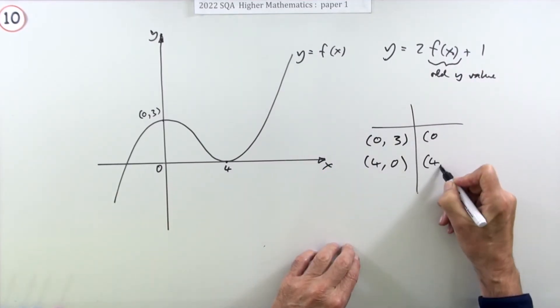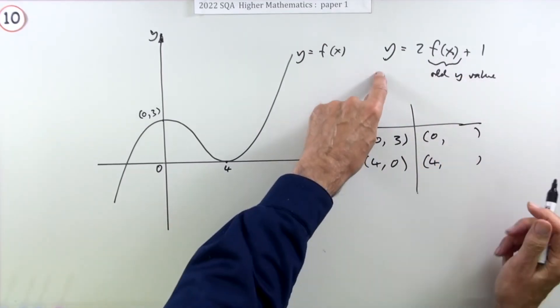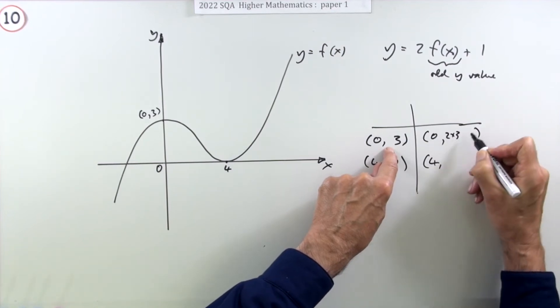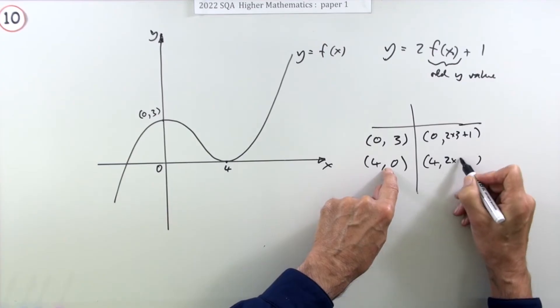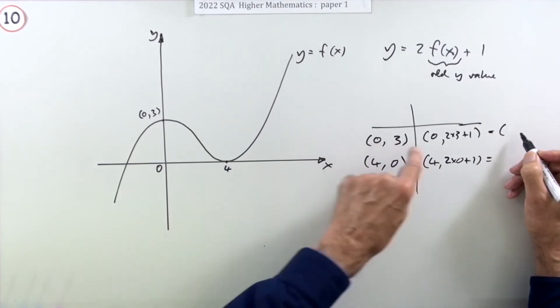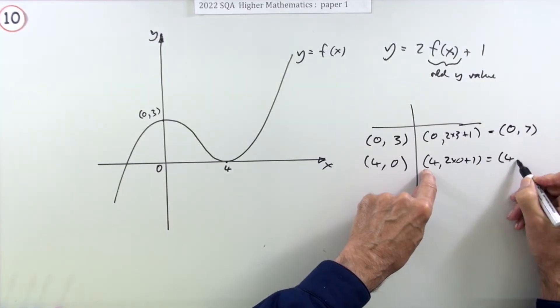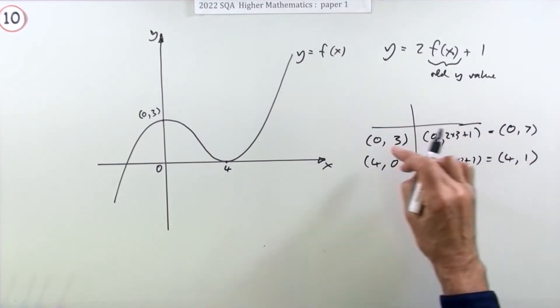So they just stay where they are. It's only the y's that are being changed. Two times the old y, I'll put the working down. Two times three plus one, two times the old y, two times zero plus one. I'll just put it again over here. So this point should go to the point zero seven and this should go to the point four one.